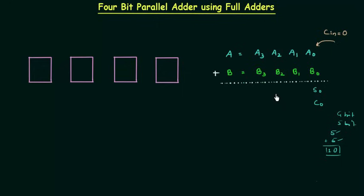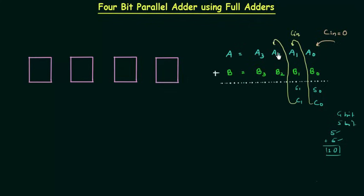We have to use another full adder to add the next two bits A1 and B1, and we have to consider C0, the carry output from the previous sum, which acts as the carry input. Let's say we get S1 as the sum and C1 as the carry output. Again we follow the same procedure: C1 acts as carry input for A2 and B2, giving sum S2 and carry C2. Then C2 acts as carry input for A3 and B3, giving sum S3 and carry C3.